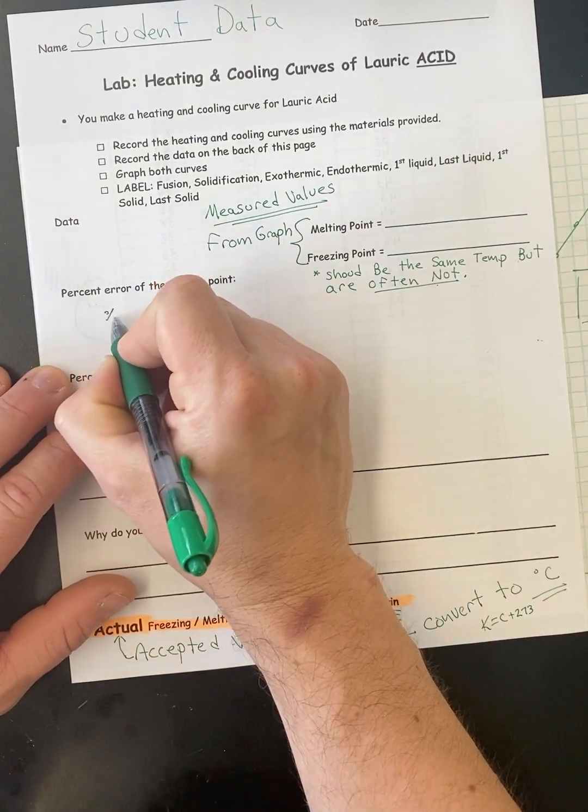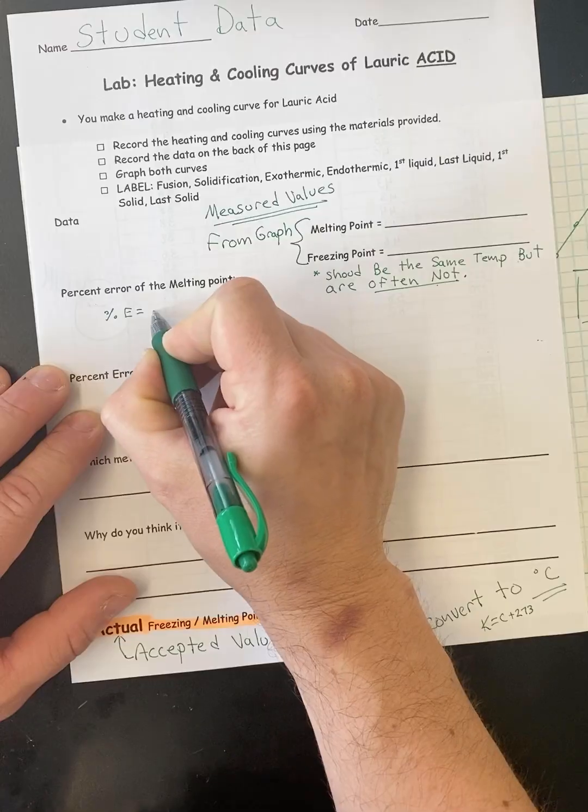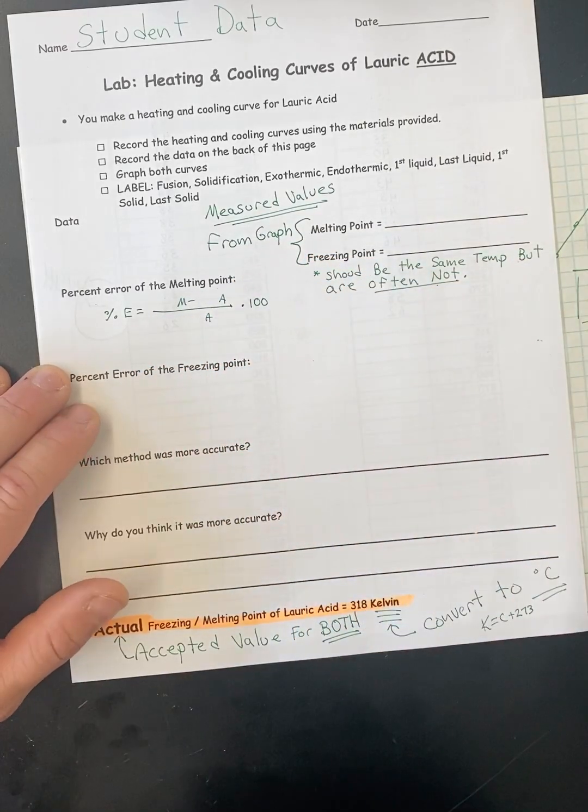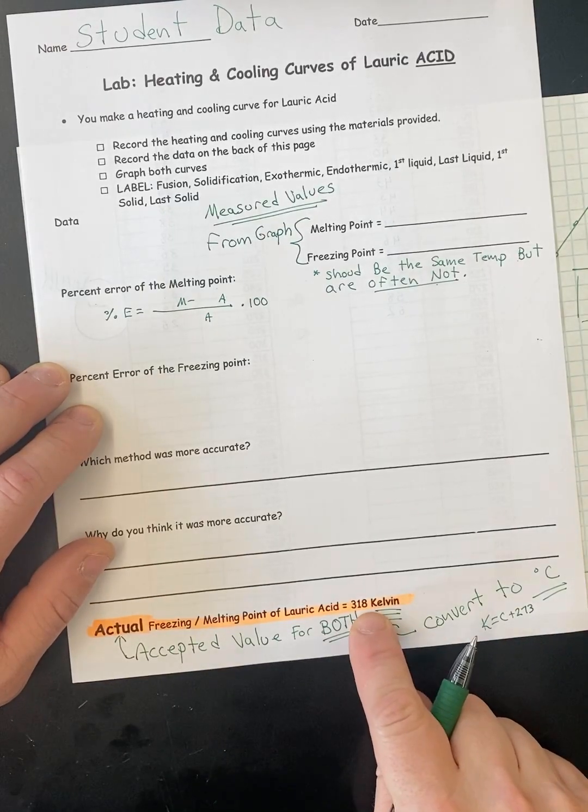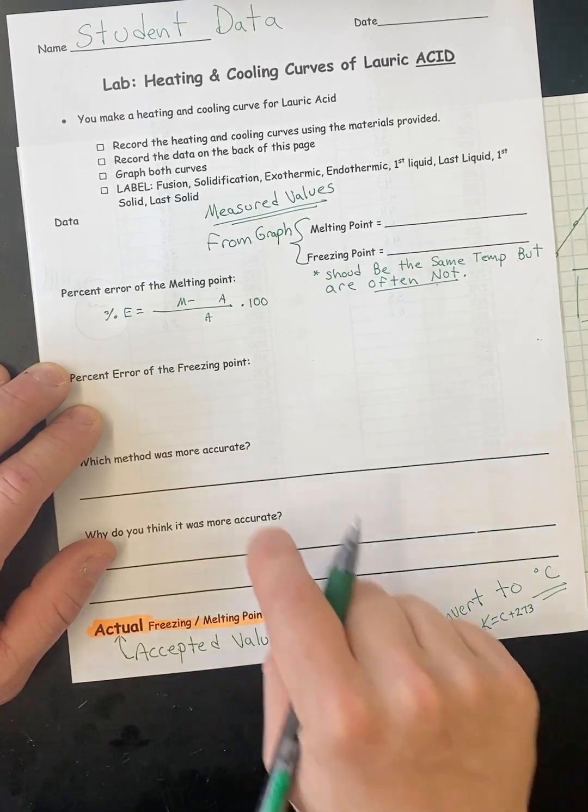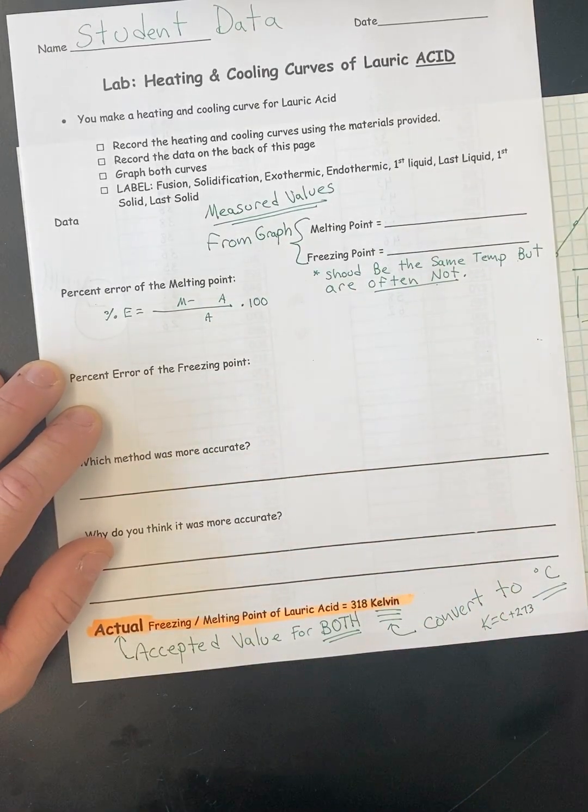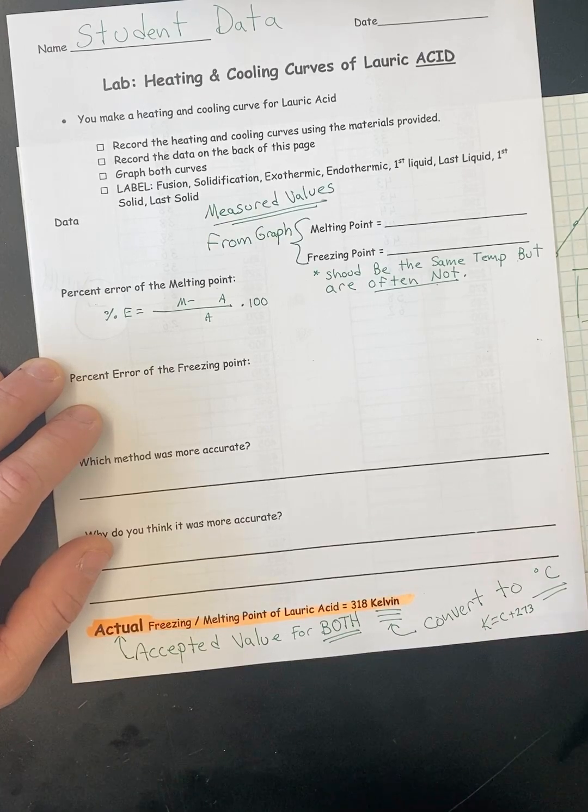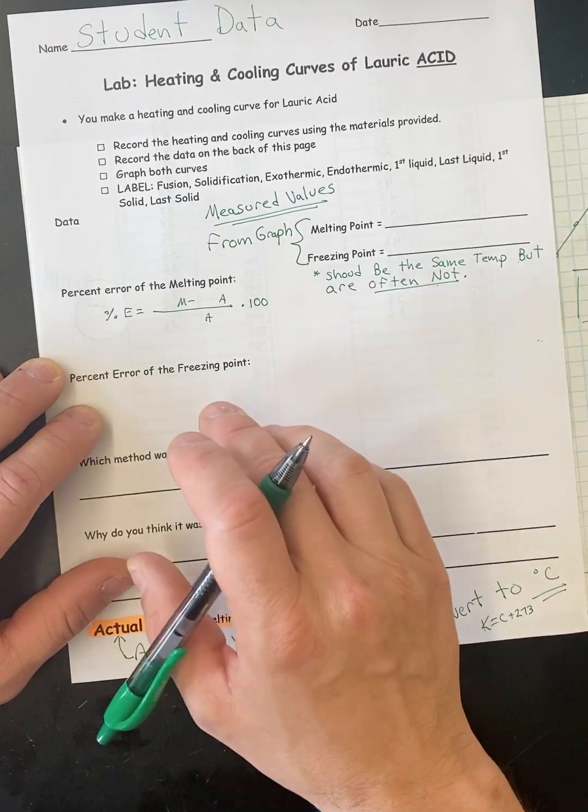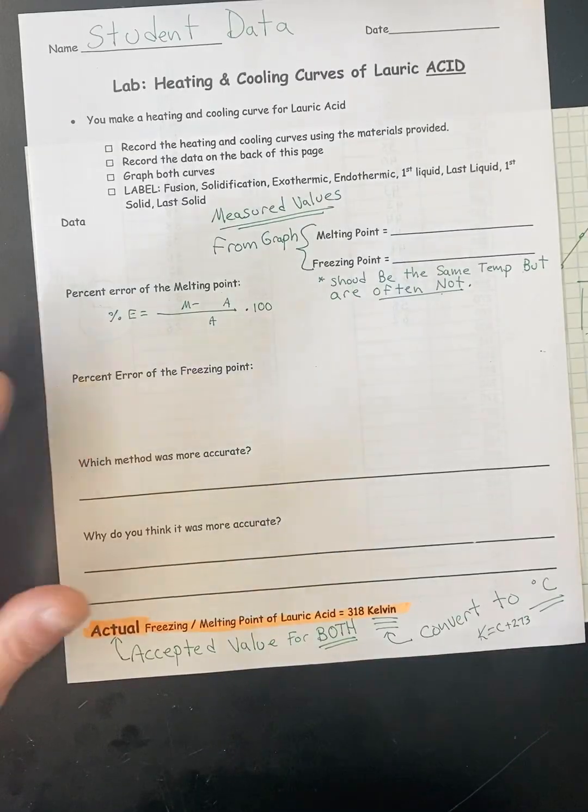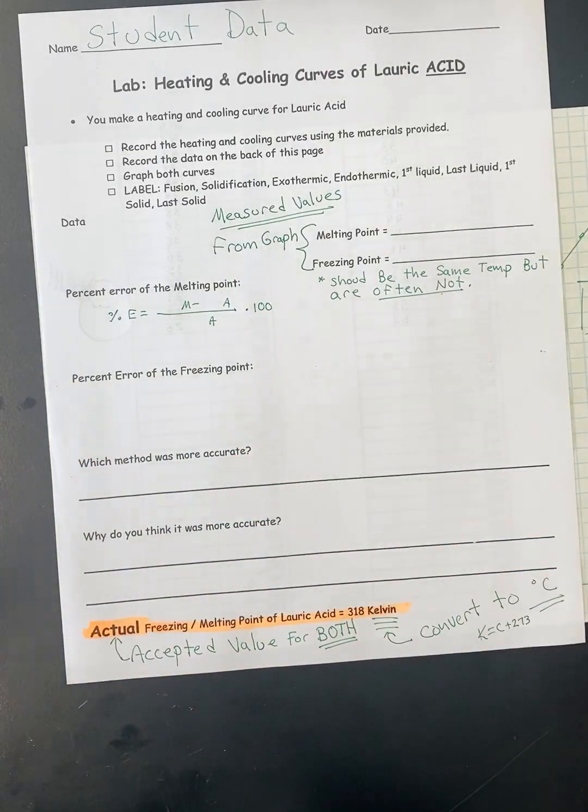And then you're going to do a percent error formula. Percent error equals, I want to see all the work for that. The accepted value is going to be from here. This turned into Kelvin. It's going to be the same accepted value for both the melting and the freezing. And then the measured value, they may be the same. Every once in a while, you get a group that does it. But I just took this from a group because the graph looked nice. And I just copied the data over by hand. And so you're going to get two, a melting point and a freezing point. And then those are going to be your measured values. And then that's the whole lab. And then there you think there's two questions at the bottom. And you're done.